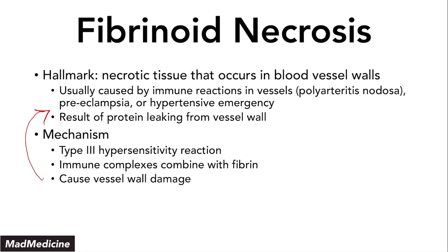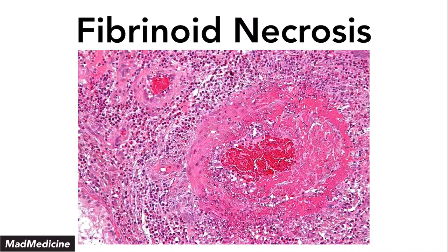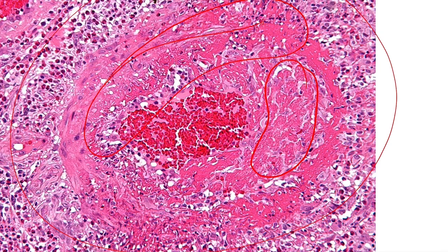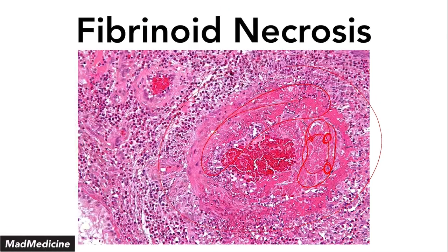The histologic characterization of fibrinoid necrosis is thick pink blood vessel walls — something you normally shouldn't see, as it should all be the same color. As you can see in this example, this blood vessel wall should not be this color — it is very pink, and there are a lack of nuclei throughout this region. This is because of fibrinoid necrosis.